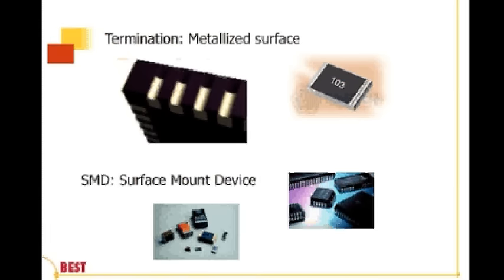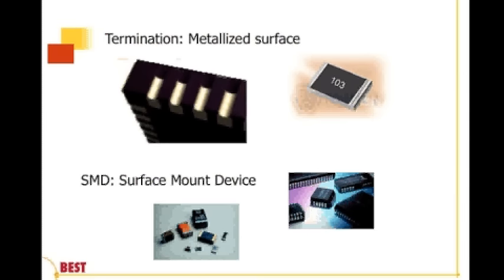Then we have the termination, which is a metalized surface. We see on the left-hand side the castellated surfaces coming out of the package. On the passive device labeled 103, we have metalization on the ends — it could be one, three, or five faces — and that's where the solder attaches itself, forming that intermolecular layer providing both electrical conductivity and mechanical structure. Then we have SMDs or surface mount devices, which lend themselves to pick-and-place machinery and automation — the most prevalent component body style at this point.